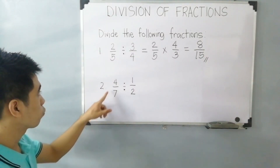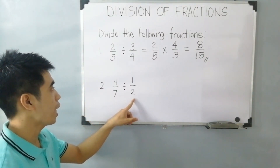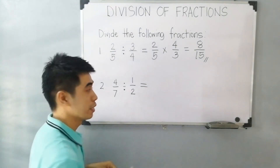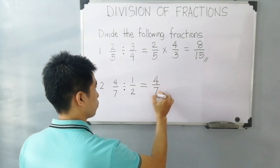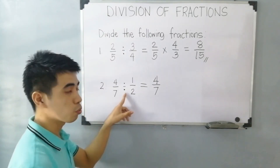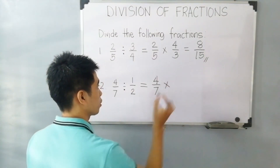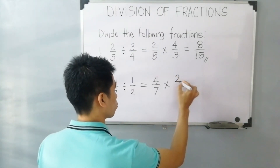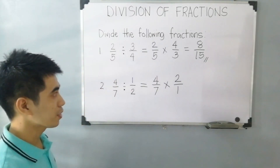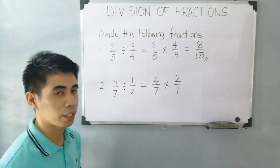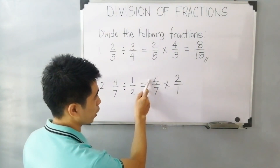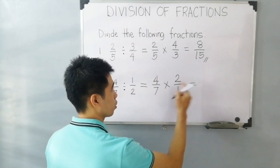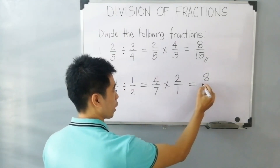For item number 2, we have 4 over 7 divided by 1 half. The first step is to rewrite the first fraction, which is 4 over 7. Then change the operation into multiplication. Then get the reciprocal of the second fraction, which is 1 half — it will become 2 over 1, or 2. Since 4 cannot simplify with 7 and 1, and 2 cannot simplify with 7 and 1, just multiply the numerators: 4 times 2 is 8, and 7 times 1 is 7.